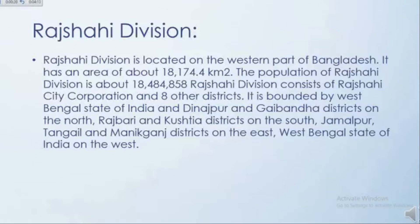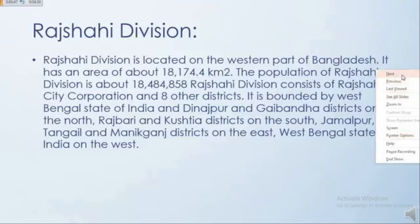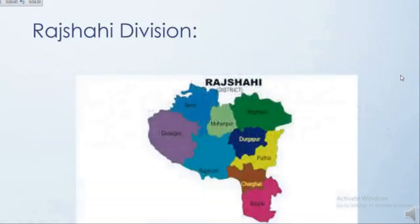It is bordered by the West Bengal state of India on the west. This is the map of Rajshahi division.